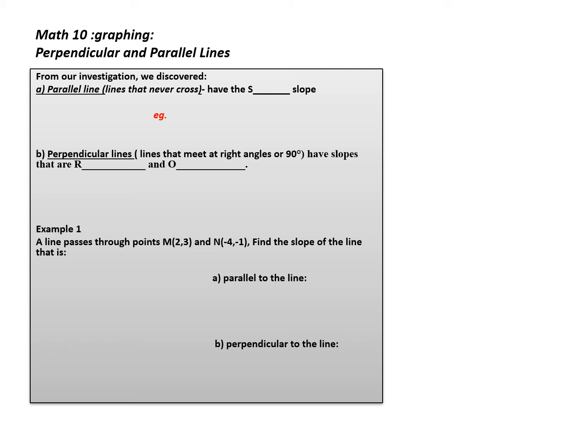Perpendicular and Parallel Lines. If you did our investigation earlier, you would have discovered that parallel lines — lines that never cross — have the same slope. An example is these two lines that will continue on forever, never crossing, like railroad tracks.